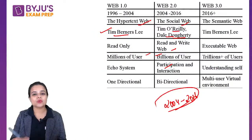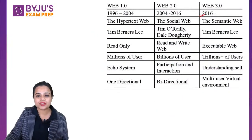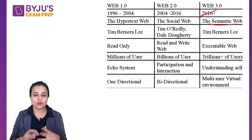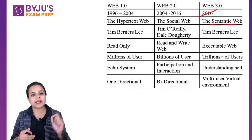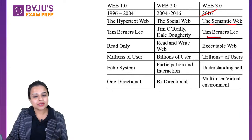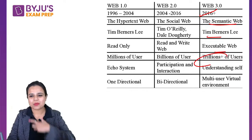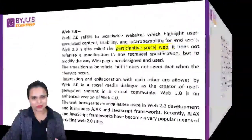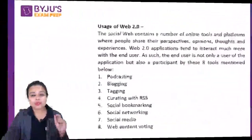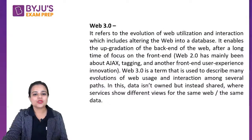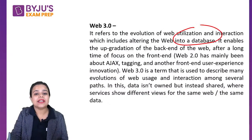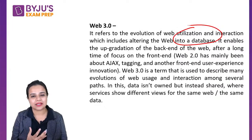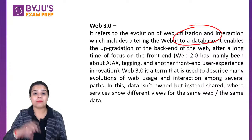After 2016, Web 3.0 started — its name is the Semantic Web. If asked which web version is called the Semantic Web, the answer is Web 3.0. It is associated with Tim Berners-Lee and is described as the Executable Web, with trillions of users. In this version, a virtual environment was created. It is basically about the database — we are no longer depending on one traditional database but exploring and upgrading the back-end.